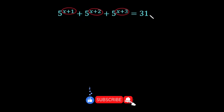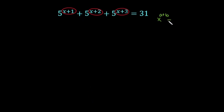We know there is a very strong property of the exponent: if x raised to the power a plus b, this can be written as x raised to the power a times x raised to the power b. You can move from left-hand side to right-hand side, or from right-hand side to left-hand side — both ways this property is true. So I am going to expand these three terms.